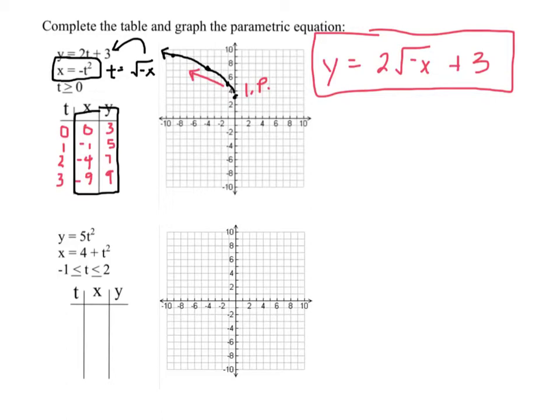Okay, let me do this other one real quick. So our points are negative 1. Let's stay in the domain here. So x component was 4 plus t squared, so 4 plus negative 1 squared is 5. 4 plus 0 squared is 4. This would be 5. And 4 plus 2 squared would be 8.